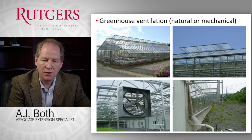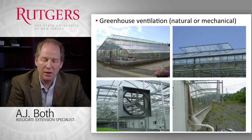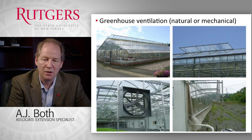Another ventilation system is the Dutch Venlo greenhouse, which typically only has vent windows in the roof. And depending on the location of the window, the prevailing wind direction and the wind strength, those vent windows can act as inlet openings, outlet openings, or perhaps even as both an inlet and an outlet opening depending on the pressures and the airflow created at that location.